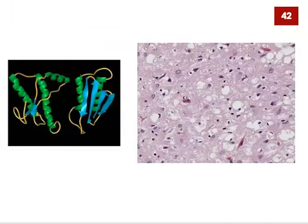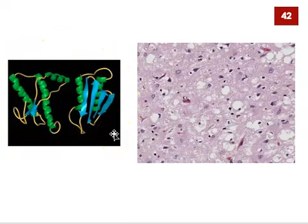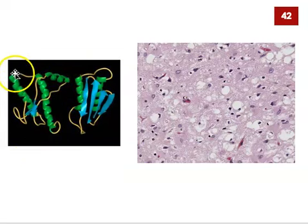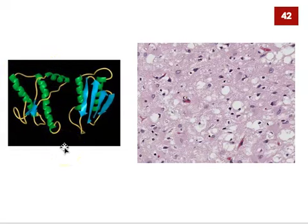This last slide has two images. On the left is an artist's depiction of both a normally folded protein and a prion. On the right is a section of tissue taken from the brain of a person who died of a prion disease. The drawing on the left shows a protein — it starts as a long chain of amino acids, then inside the cell that chain gets folded into a three-dimensional structure with helical regions shown in green, flat sheet regions in blue, and open loop regions.